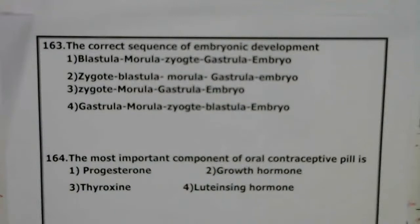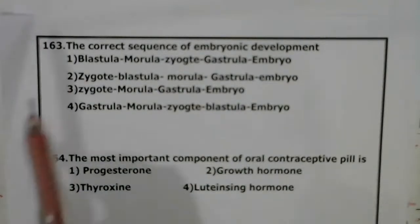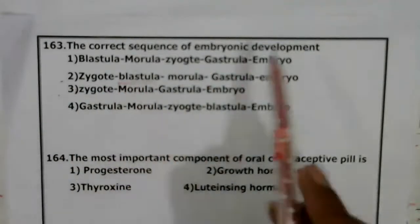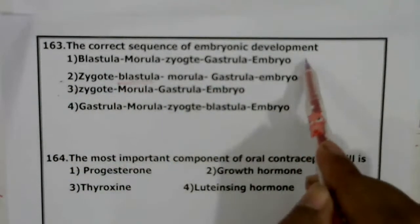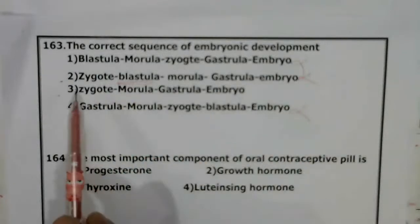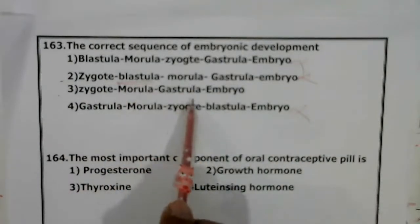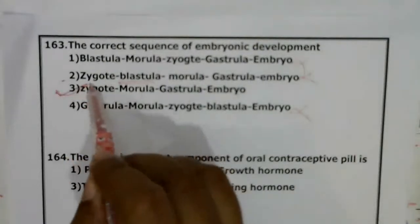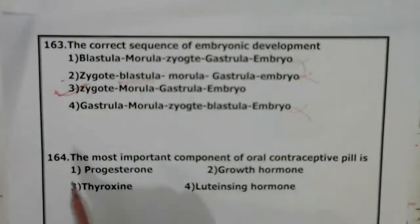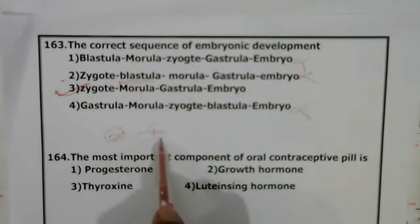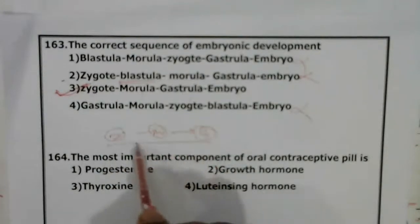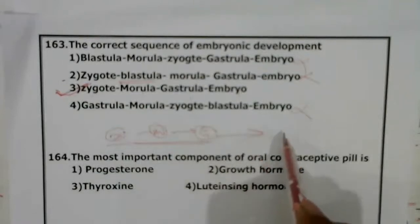Question 163: Correct sequence of embryonic development. First, zygote is formed. The correct sequence is: zygote → morula → gastrula → embryo. So the correct answer is option 3.